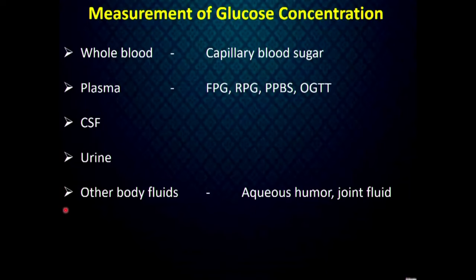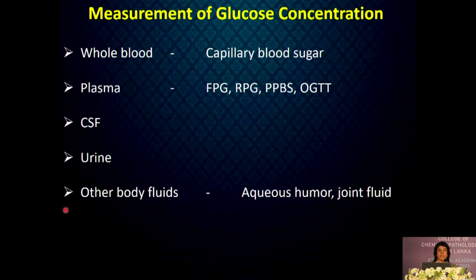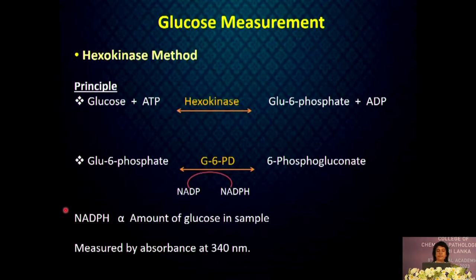Glucose can be measured in whole blood, plasma, CSF, urine and other body fluids including aqueous humor and joint fluid. There are various methods of measuring glucose in body fluids. Among them, enzymatic methods such as hexokinase and glucose oxidase methods are widely used.